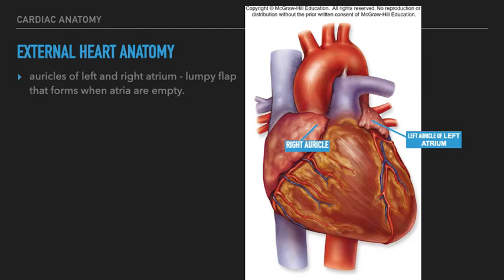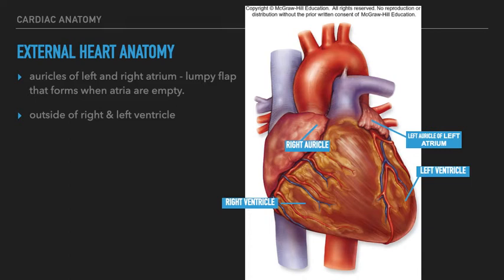We can also identify the right ventricle and the left ventricle from the outside of the heart. We also have the inferior tip of the heart, which is called the apex.